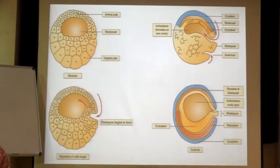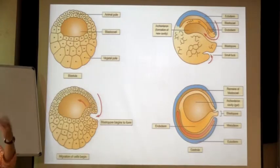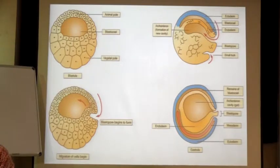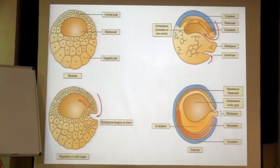Further movement goes on and on, and you are going to have another cavity — your archenteron — in the later stage of gastrulation. Now you have three cavities: blastocoel, gastrocoel, and a primitive digestive gut which is the archenteron. When archenteron is formed, blastocoel is totally gone. At this point, the cells of the gastrula stage are divided into three particular layers: mesoderm, ectoderm, and endoderm. These three germ layers are now ready to make your organs.